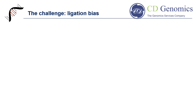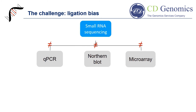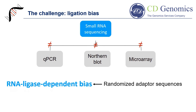Researchers have gradually found that sequencing data containing differential expression of small RNAs is sometimes inconsistent with microarray, qPCR, and northern blot results. This has been primarily attributed to the RNA ligase-dependent bias for particular adapter sequences, introduced during small RNA library construction. Studies have suggested that randomizing the adapter sequences close to the ligation junction can reduce ligation bias and optimize sequencing results.